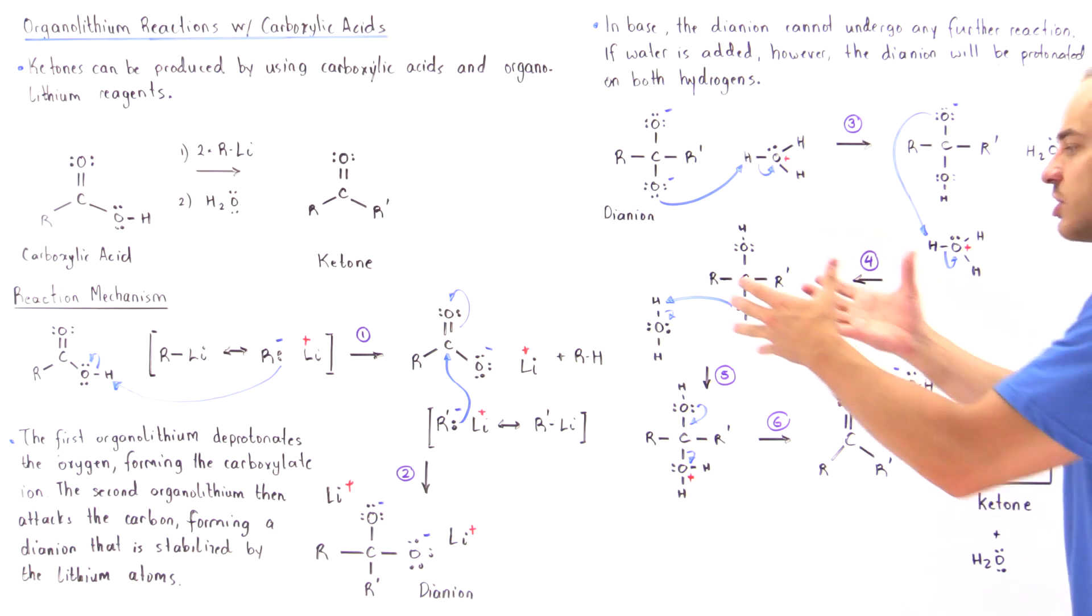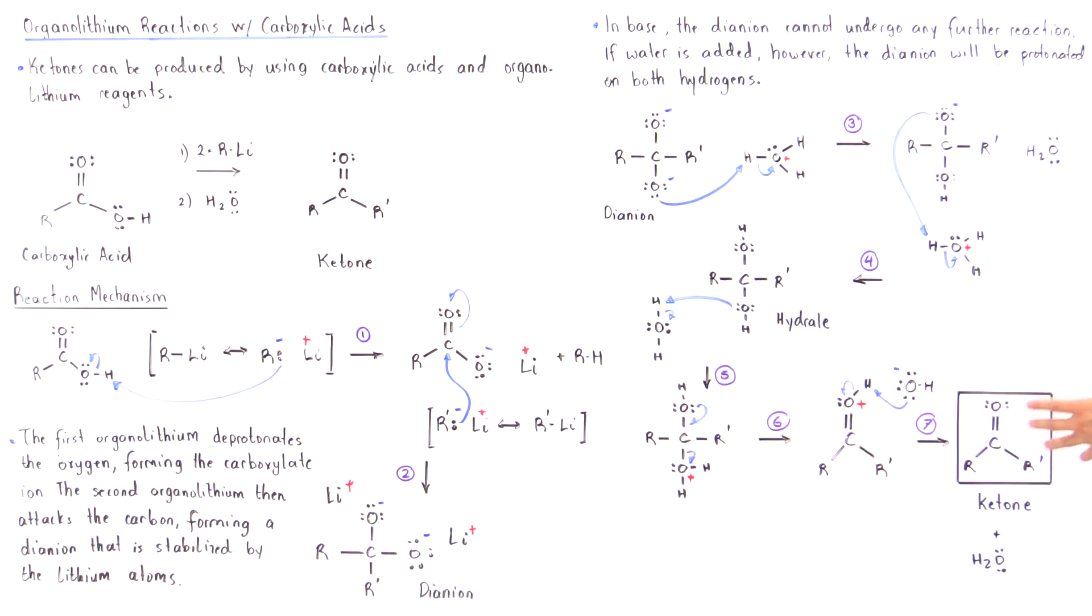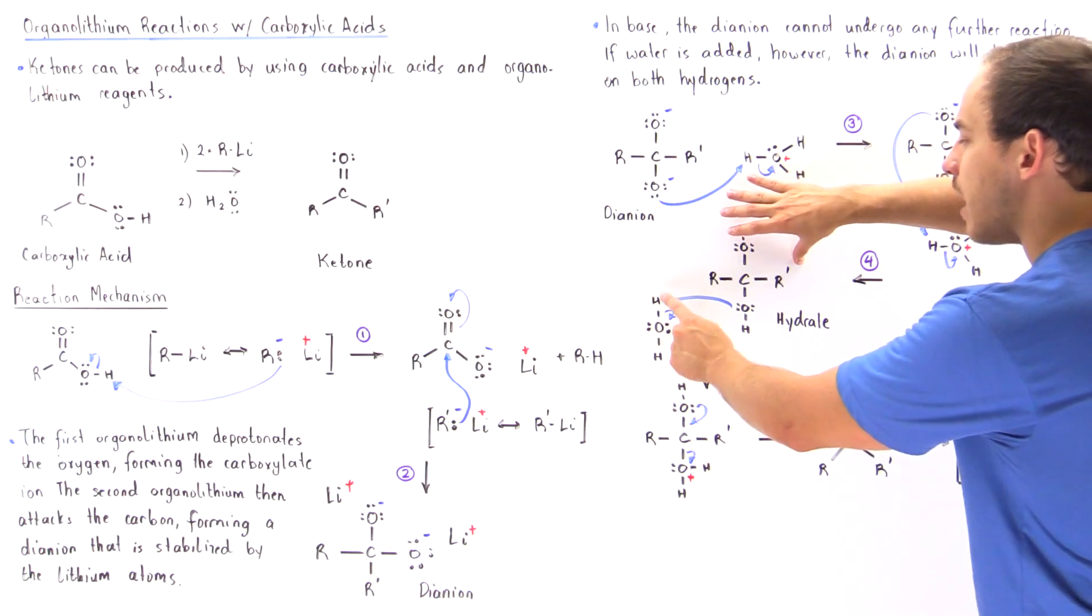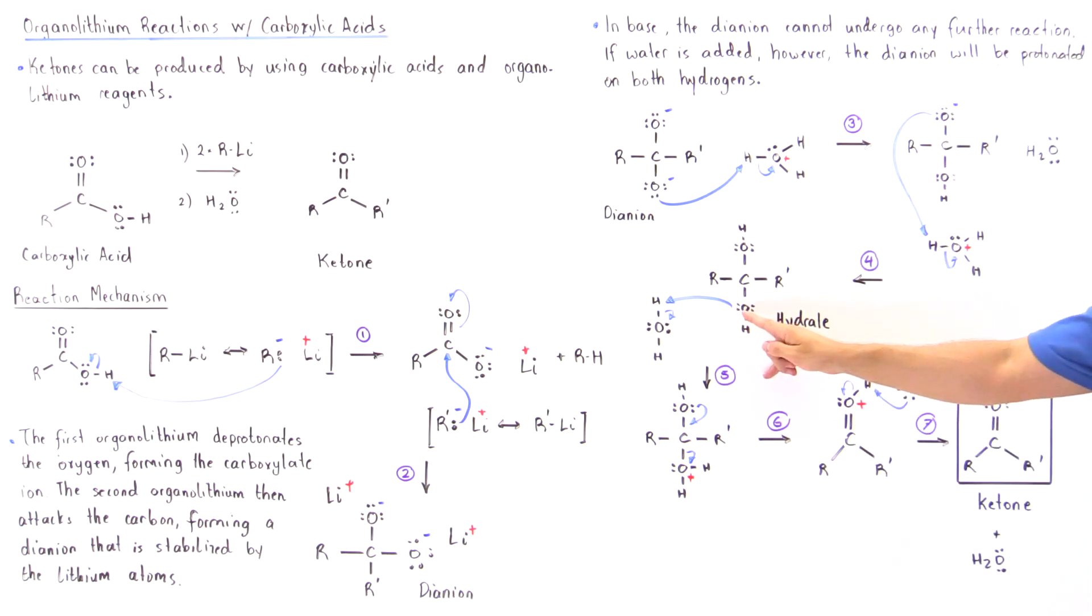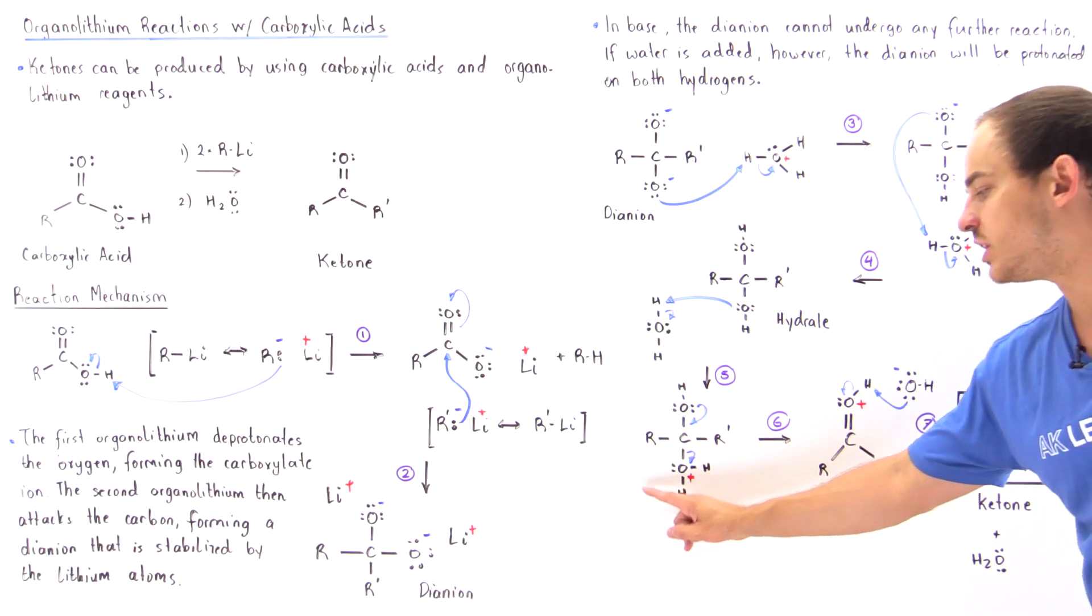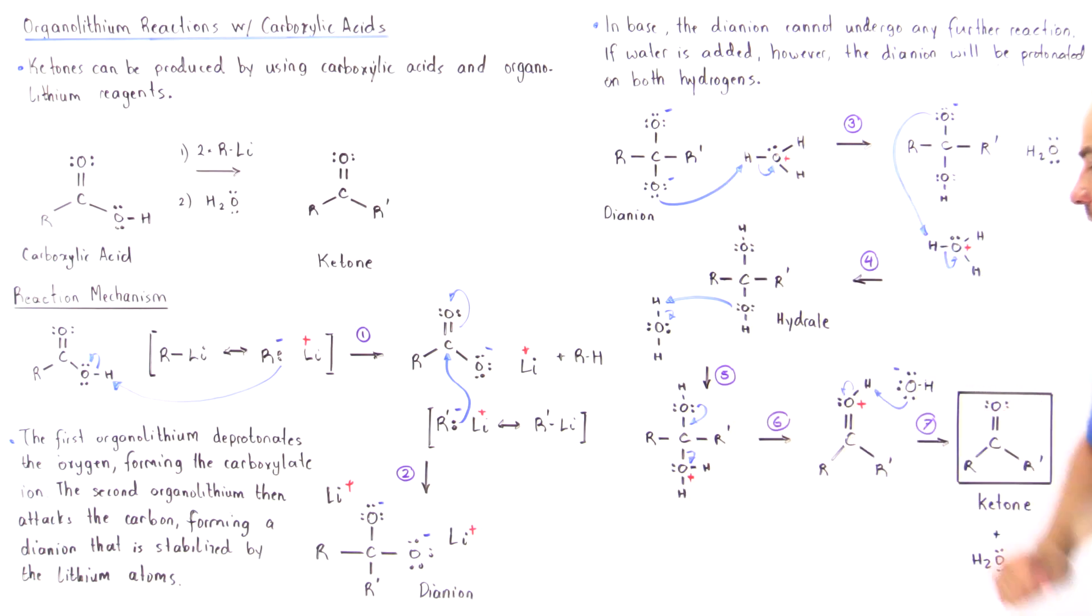The hydrate can then convert to the ketone because the hydrate is less stable than the ketone product. When a water molecule approaches one of the hydroxyl groups, it protonates the hydroxide group. In the next step, the second hydroxide group creates a pi bond between the oxygen and carbon, displacing the good leaving group formed in step five.